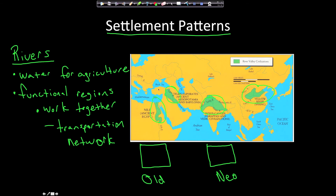Another important point is how population density changed because of the Neolithic Revolution. Population density means how many people live in a given area. Before the Neolithic Revolution, when people were nomadic hunter-gatherers, population density was very small — maybe two or three people in a given area. You needed a lot of land to support people because you had to hunt animals. You couldn't have too many people on the land, or there wouldn't be enough animals to feed them.